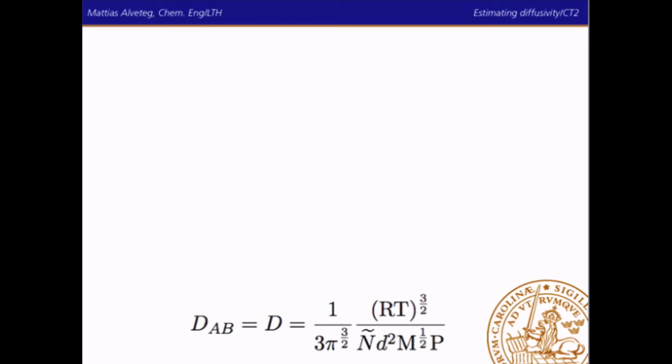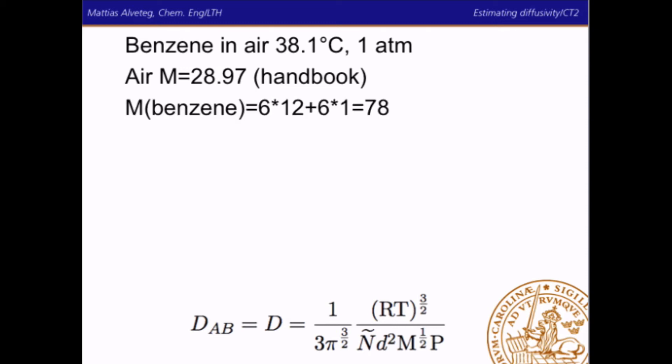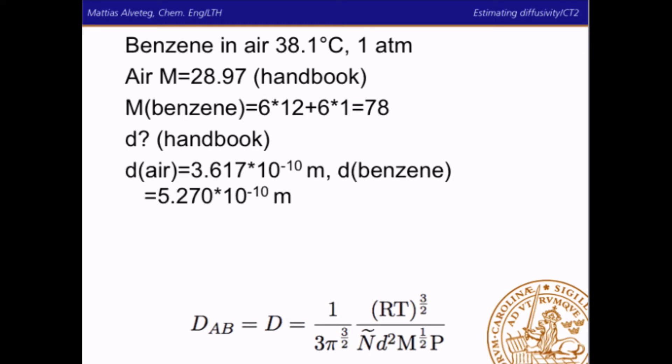Okay, let's do a calculation. This is the simplified inaccurate equation that we're going to use. And let's calculate the diffusivity for benzene in air at one atmosphere and 38.1 degrees Celsius. We use our handbook and look up the molar mass of air, which is 28.97 grams per mole. And we will treat air as one component, although it actually contains nitrogen, oxygen, and so on. As for molar mass of benzene, we have six carbon atoms and six hydrogens. So we have 78 grams per mole. The size of the molecules? Well, we actually have a table with characteristic collision diameters, and that's what we want. So we look it up as 3.6 angstrom for air and 5.27 angstrom for benzene.